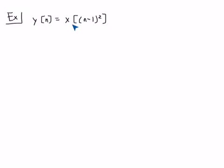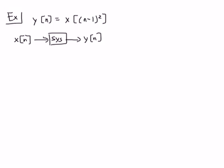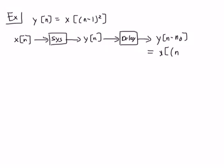This is a little harder to think about — you're basically calculating the output by indexing into the input using (n - 1)². Starting with our standard approach: take x(n), process it through the system to get y(n), then delay it by substituting n - n0 for n everywhere, giving y(n - n0) = x((n - n0 - 1)²).